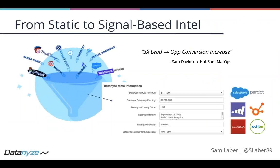A big piece of staying in tune with this new funnel is moving from a static to a signal-based intelligence strategy. When I think of a static market intelligence strategy, I think of that foundational layer — baseline information about a company, their firmographics, maybe location, the industry they play in, and maybe their revenue. But the way buyers work now, it's all based on signals — you have to be able to understand what your buyers are telling you and react in time. For example, tons of signals are being broadcast from a prospect's website. If you look at tech stack, technologies are always changing — prospects are always changing technologies.